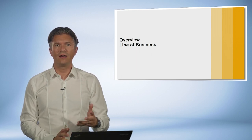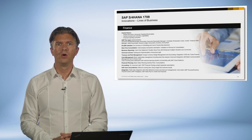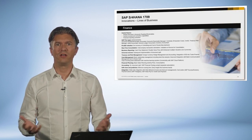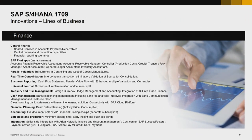Let's now get a glimpse of the highlights for the line of businesses. We start with finance. Finance is the cornerstone of every business, and SAP S4HANA 1709 is adding a lot to existing capabilities. I will highlight only three of them. First, as a new capability, let me mention soft close on prediction, that together with the financial closing cockpit gives the ability to close the books using an abbreviated closing procedure.